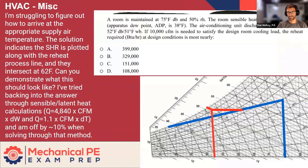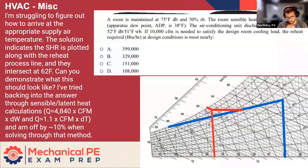We have a psychrometrics question. I'm struggling to figure out how to arrive at the appropriate supply temperature. The solution indicates the SHR, sensible heat ratio, is plotted along with the reheat process line and they intersect at 62. Can you demonstrate what this should look like? The written answer doesn't draw a picture — it just tells you that there's these lines and it should intersect at 62, but it's not really much of an explanation at all.